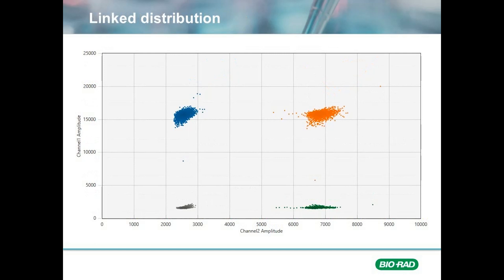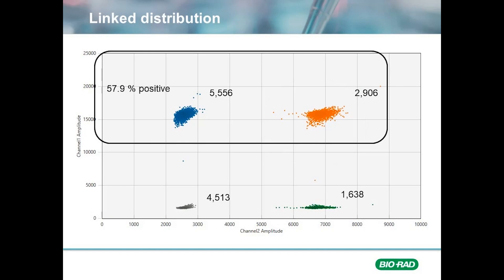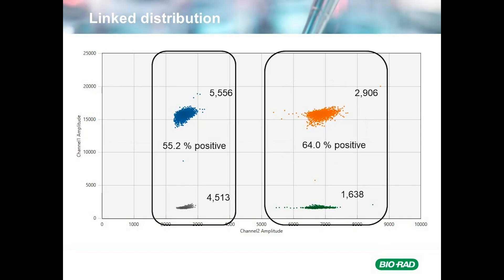Now let's look at a sample that has linked molecules. When items are linked, the molecules that would migrate to either a FAM or a HEX droplet on their own are stuck together and end up in the double positive cluster. Looking at the total percentage of droplets that are FAM positive, we see that they are 57.9% for the entire assay. When we look at the ratio of positives as a function of the presence or absence of the other target, we immediately notice that the ratios differ. The ratio of FAM-only positive droplets is reduced, and the ratio of FAM positive droplets that are also HEX positive is increased.